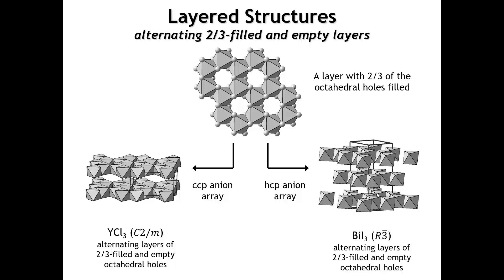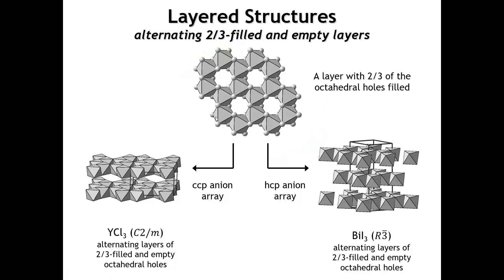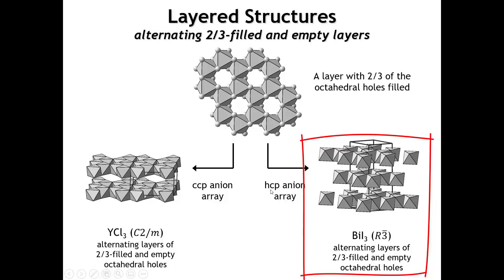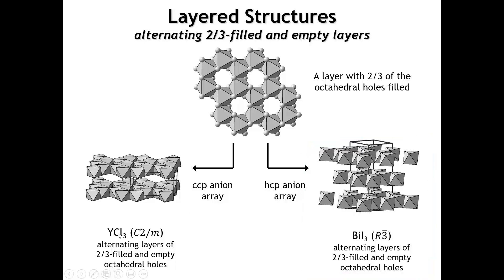Filling two-thirds of the octahedral holes in a layer gives a honeycomb-like structure—analogous to the atom arrangement in graphene. Alternating fully filled layers with completely empty layers produces an average one-third filling of octahedral holes, giving a 1:3 cation-to-anion stoichiometry. Bismuth iodide (BiI₃) results from an HCP anion array, and yttrium chloride (YCl₃) results from a CCP anion array.